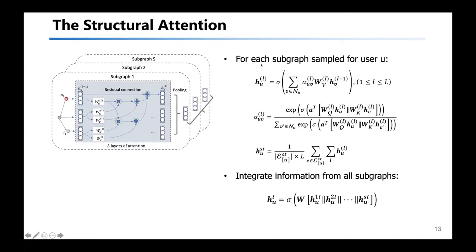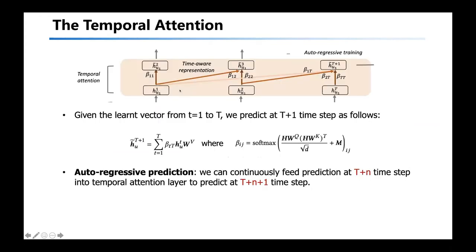Based on the sampled subgraphs for each user, we deploy structural attention to integrate information from the subgraphs to each user. Specifically, for each subgraph sampled for a user, we use a multi-layer graph attention network to integrate the information to the user embedding. Since we can sample a bunch of subgraphs for each user, we integrate the information from all subgraphs via one layer of MLP to better fuse the information across different subgraphs. From each time step, we learn the user embedding to represent the user's local information.